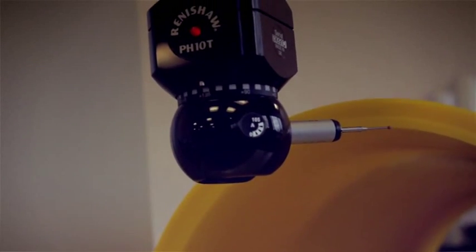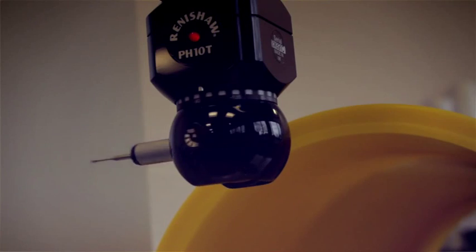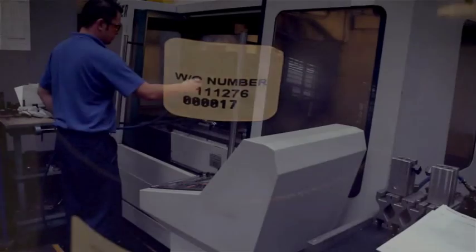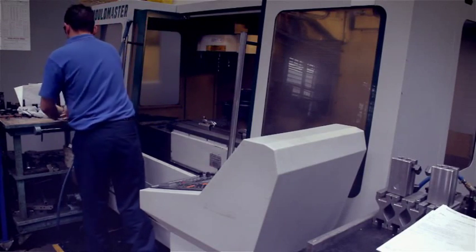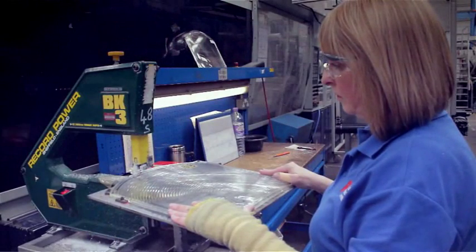The computerized manufacturing system covers its entire operation providing full traceability. This not only ensures consistency for all your molding requirements but also means the progress of your order can be tracked through all the stages of production.